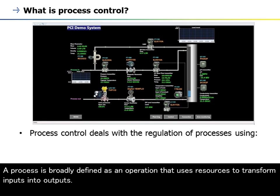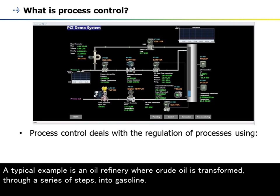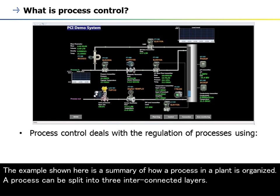A process is broadly defined as an operation that uses resources to transform inputs into outputs. A typical example is an oil refinery where crude oil is transformed, through a series of steps, into gasoline. The example shown here is a summary of how a process in a plant is organized.